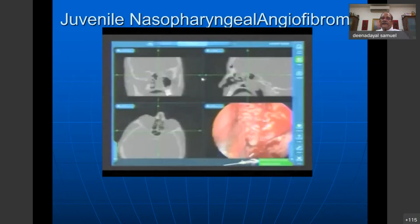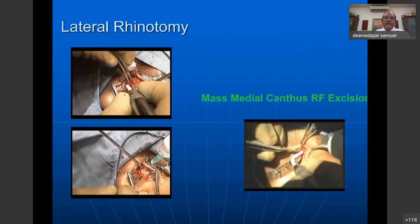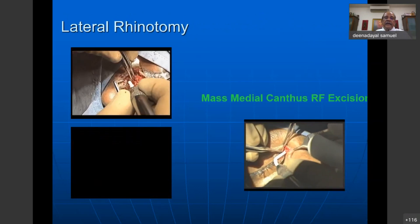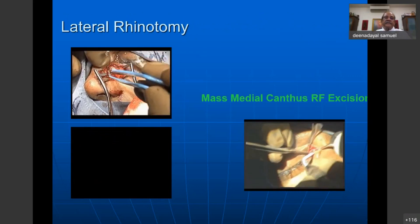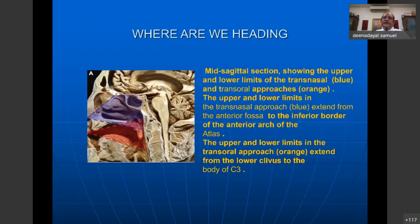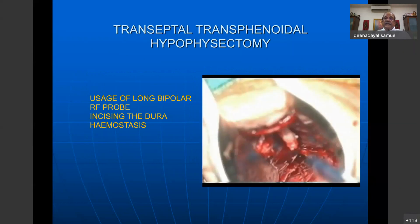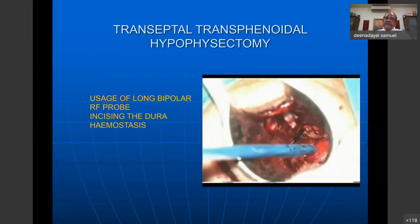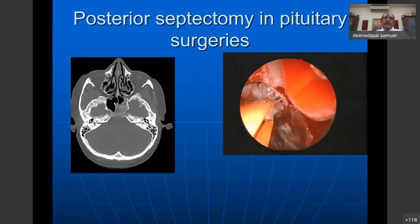Radio frequency has been used posteriorly right up to the odontoid process, into the hypopharynx, and throughout the complete nose and paranasal sinuses. Hypophysectomy — those days called transseptal — was also done with it. Regular posterior septectomy and pituitary surgeries also used radio frequency. CSF rhinorrheas have been treated with radio frequency with very good results because temperatures are not more than 90 degrees, with very little scarring and very little lateral damage.